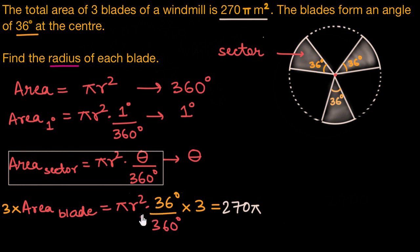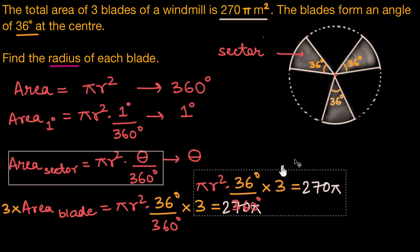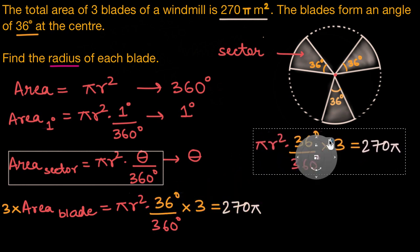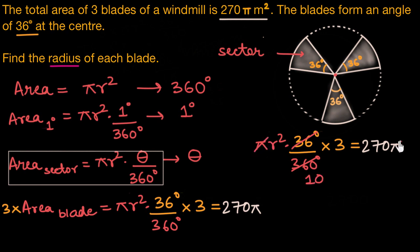Now let's solve this to find the value of r. Let me copy this and put it here. So 36 times 10 is 360. We have π on both sides. If we divide both sides by 3, we have 3 nines are 27. If we multiply both sides by 10, we'll get r² equals 900. If we take the principal square root, we'll have r equals 30 meters, which gives us the radius of each blade of our windmill.